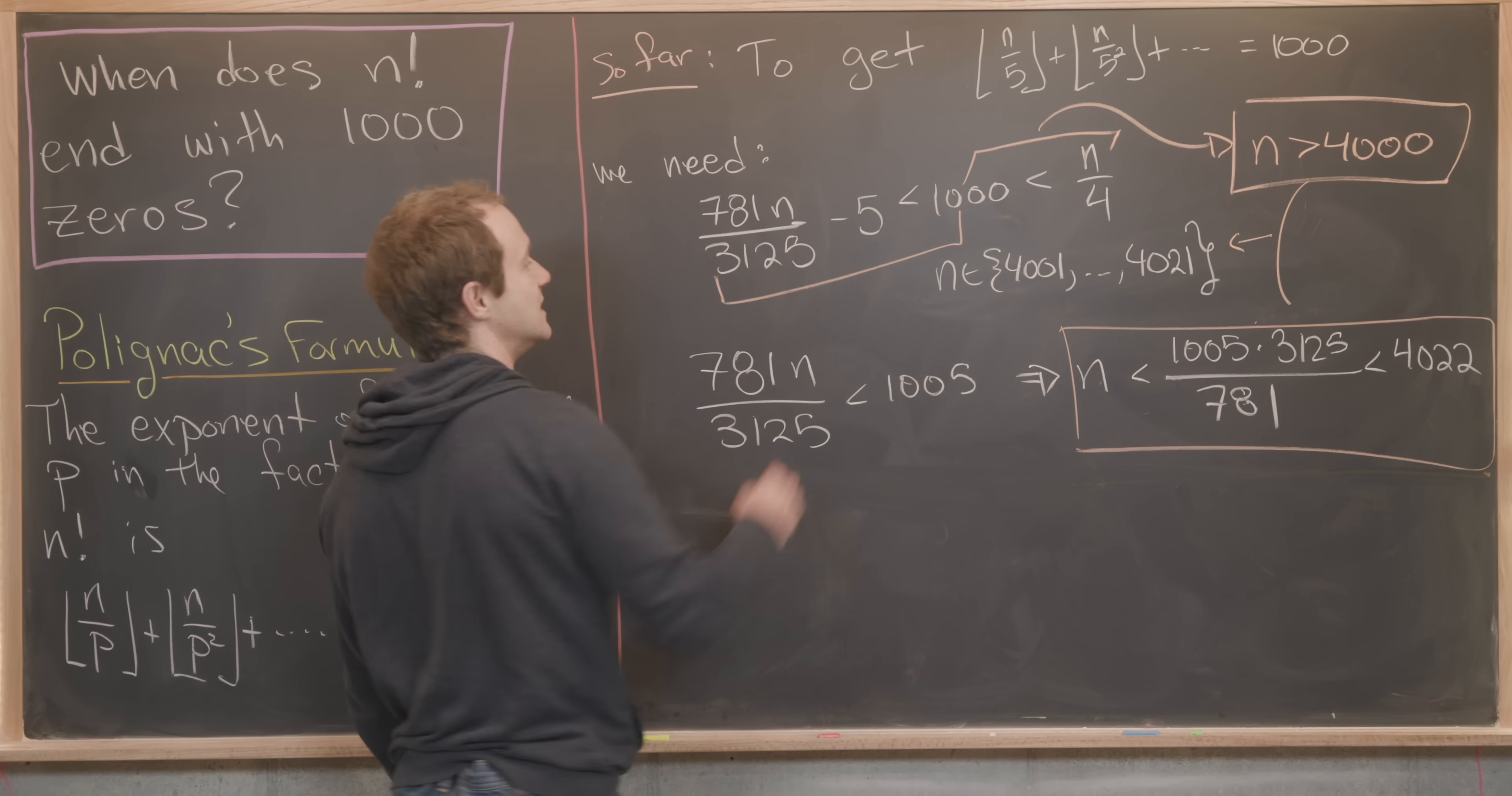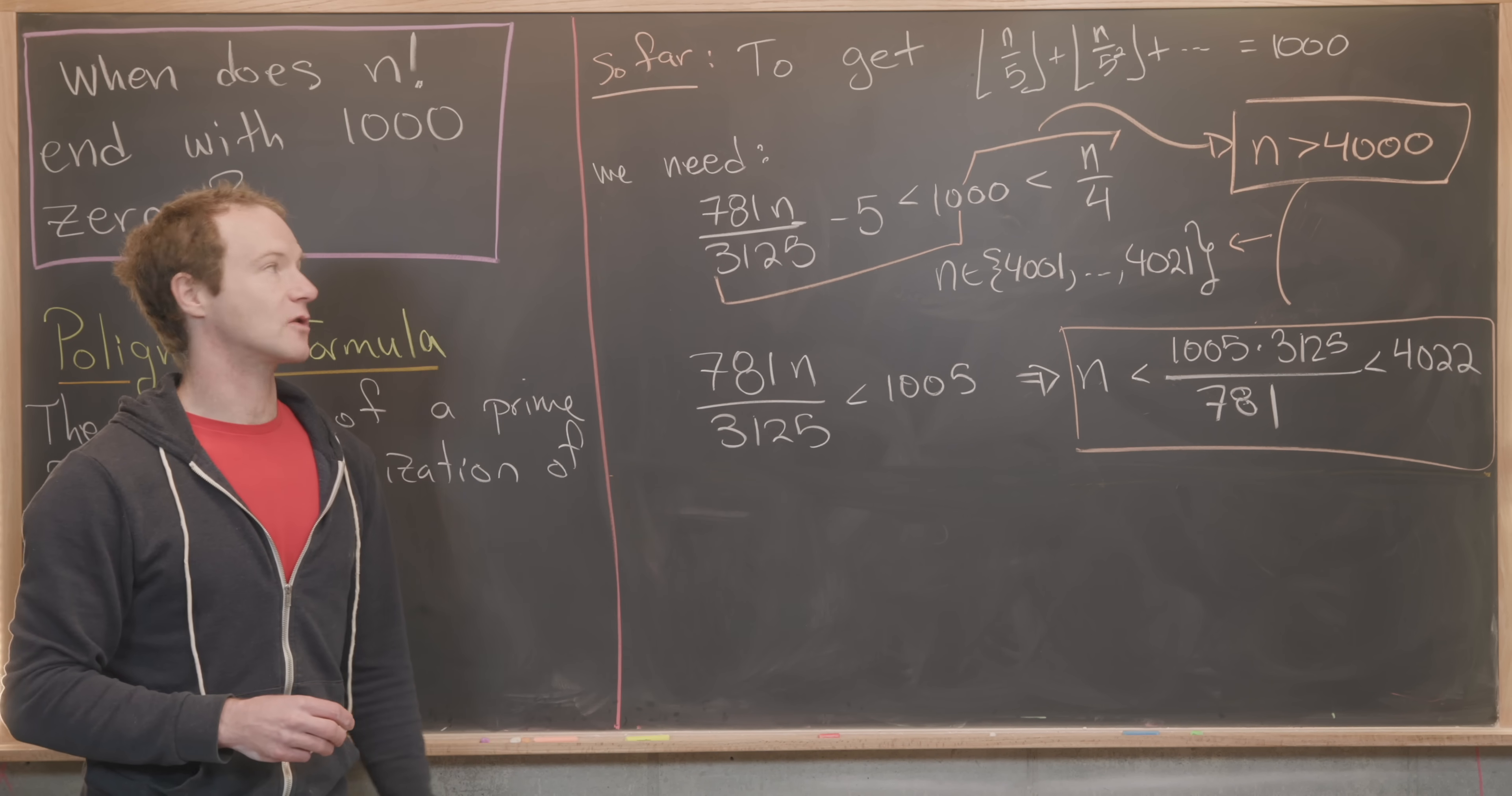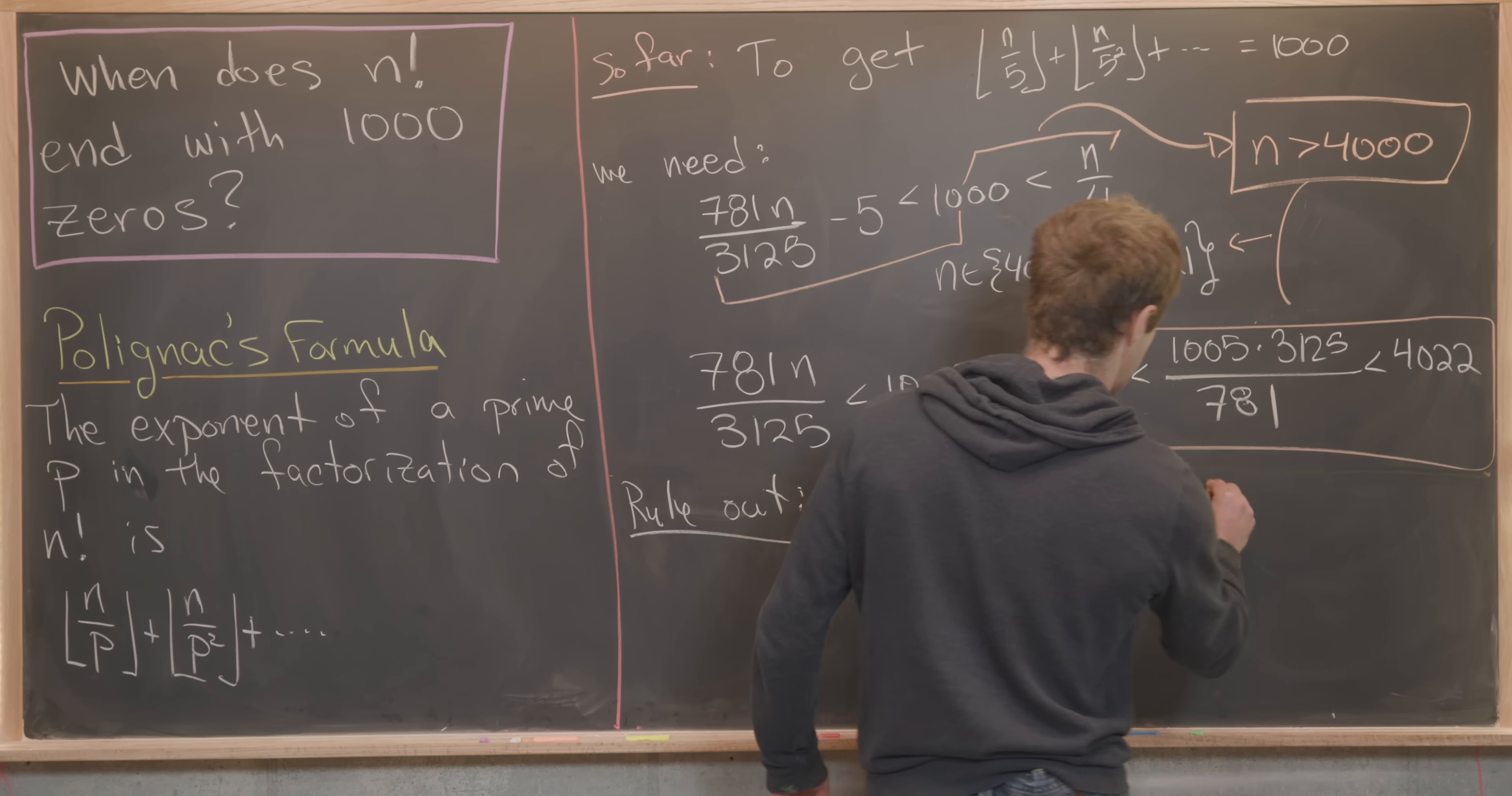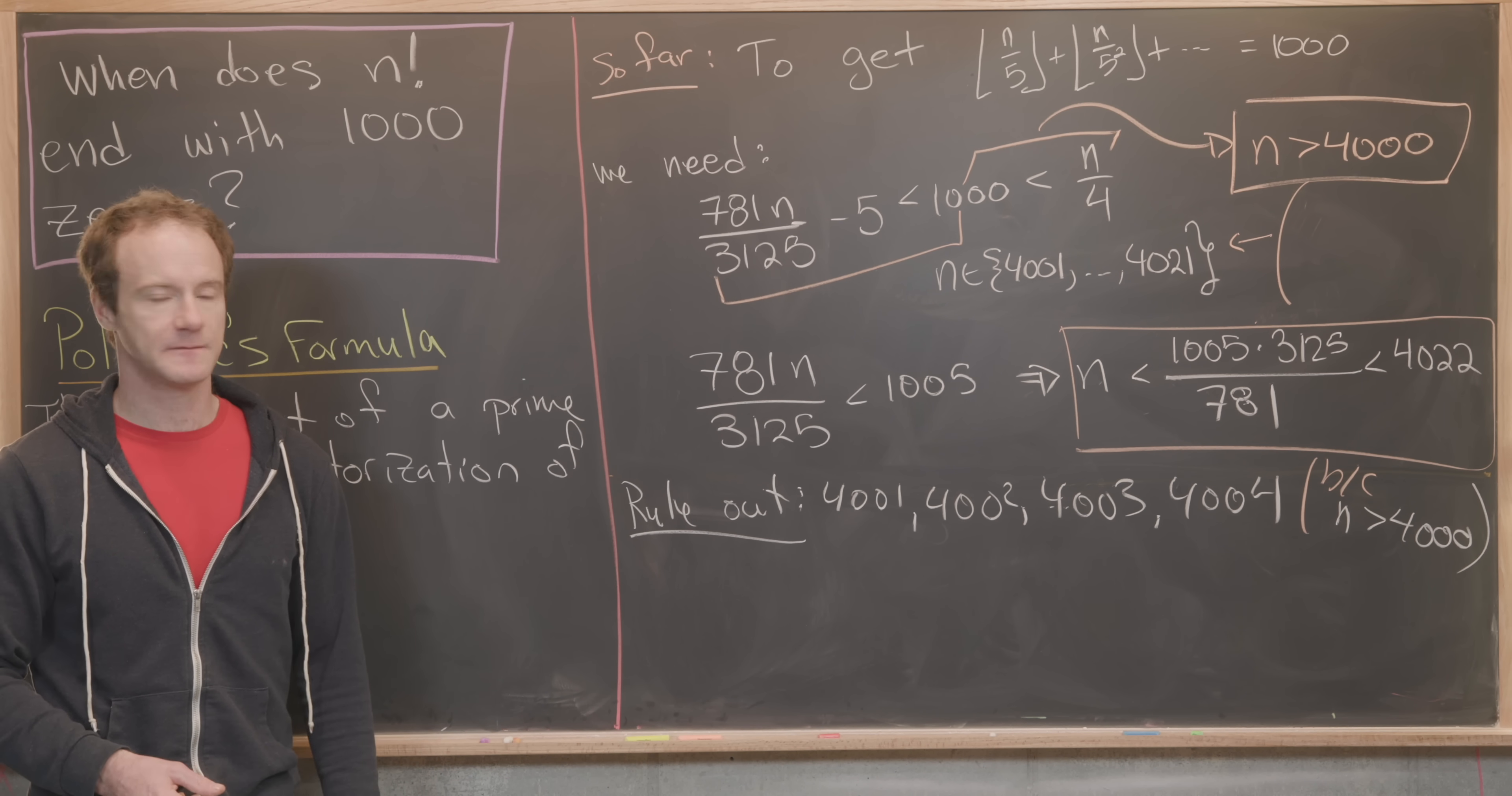Let's notice that if n is equal to 4000, it does not work because 4000 is outside of this set. But 4001, 2, 3 and 4 will all give us the same value for this object, given that we're dividing by powers of 5 and then taking the floor. That means we can immediately rule out 4001, 4002, 4003 and 4004. That's because n has to be strictly bigger than 4000, and each of these come after 4000 but before the next multiple of 5.